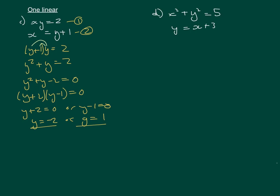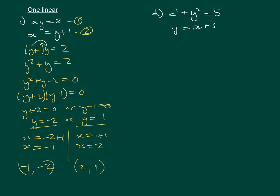Substituting into equation 2: when y is minus 2, x equals minus 2 plus 1, so x equals minus 1. When y is 1, x equals 1 plus 1, so x equals 2. We have two solution pairs: x equals minus 1 with y equals minus 2, and x equals 2 with y equals 1. I've written them as coordinates to save time, but you can write x equals, y equals form as well.